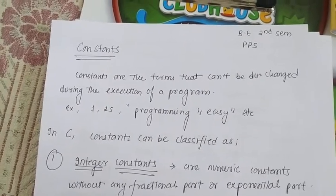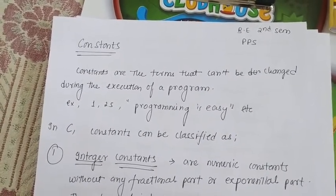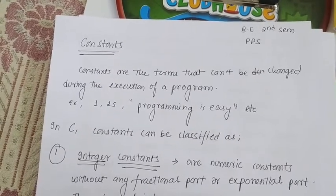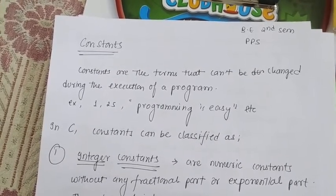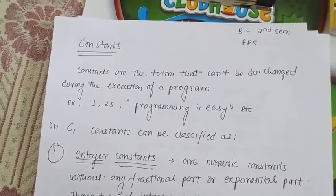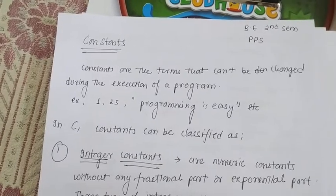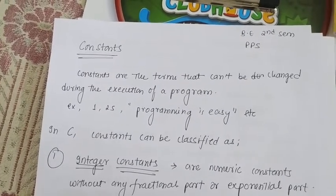The first part we studied was the basic structure of C programming, which is categorized into six parts or six sections. Then we talked about the header file and documentation. Then we studied the next topic.